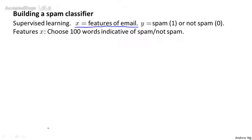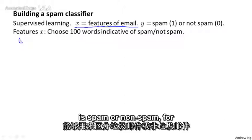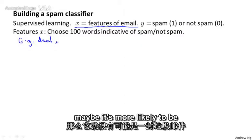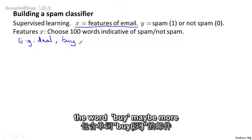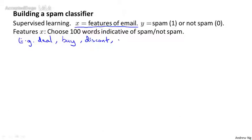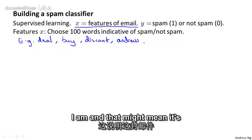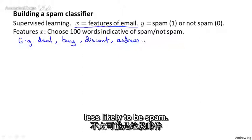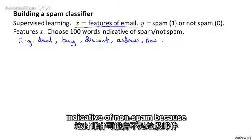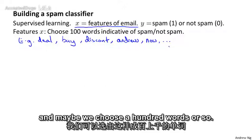Here's one way to choose a set of features for our emails. We could come up with a list of maybe a hundred words that we think are indicative of whether an email is spam or non-spam. For example, if a piece of email contains the word deal, maybe it's more likely to be spam. If it contains the word buy, maybe more likely to be spam. A word like discount — more likely to be spam. Whereas if a piece of email contains my name, Andrew, maybe that means the person actually knows who I am and that might mean it's less likely to be spam. Maybe the word now may be indicative of non-spam because I get a lot of urgent emails. So maybe we choose a hundred words or so.